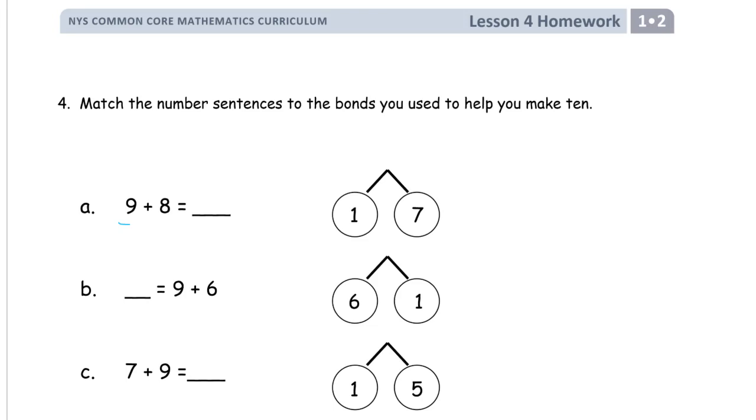This is 9 plus 8. We're looking for a 1, and the rest of the 8 would be 7. So this would be 1 and 7. 10 plus 7 is 17. We're looking for a 1 and 7 number bond to match it up. The 1 and the 7 makes an 8.